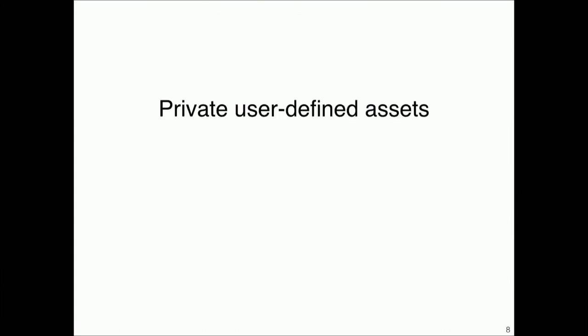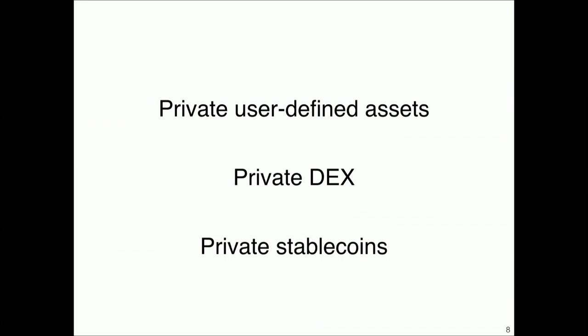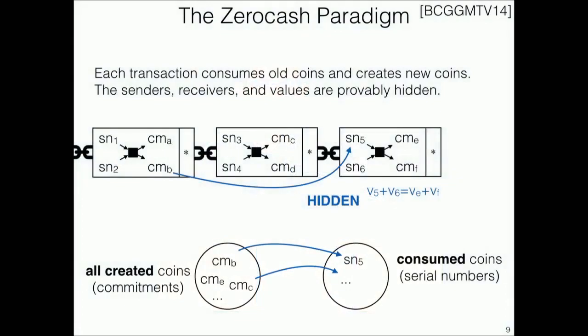So there are real problems. In this talk, we'll begin by constructing private user-defined assets with good anonymity, show how to trade these via private DEXs, and then extend both techniques to work with private stablecoins that might have different policies. Our starting point is the zero-cash protocol, because it offers ideal privacy — when I make a payment, the resulting transaction reveals no information about the consumed or created coins or the identities of sender and receiver.